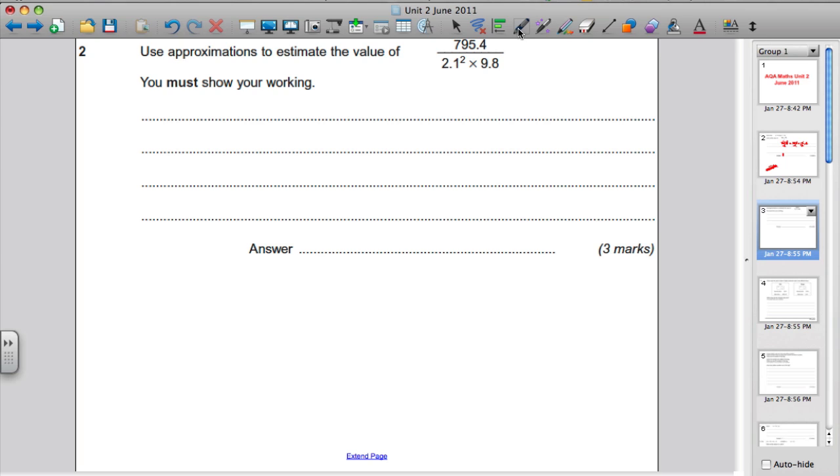Question 2. This is an approximations question. Approximations are to do with estimating the answer, not working it out entirely accurately, working it out so that it's approximately correct.